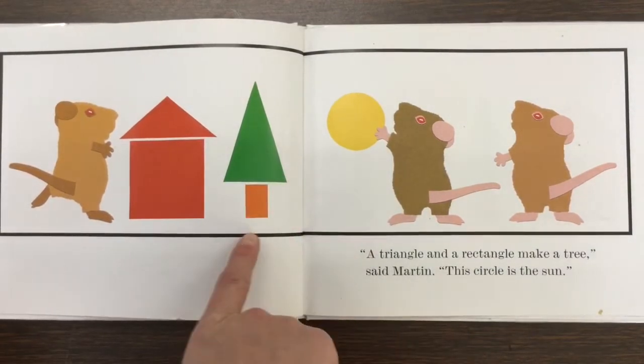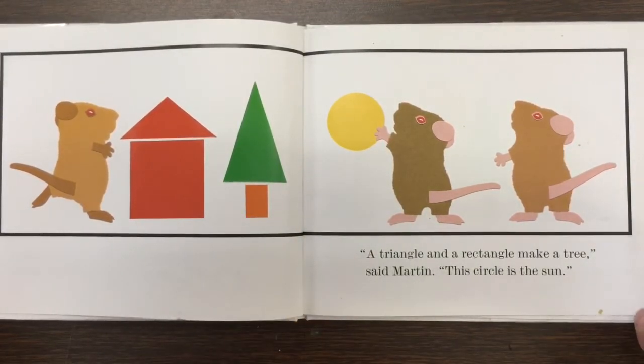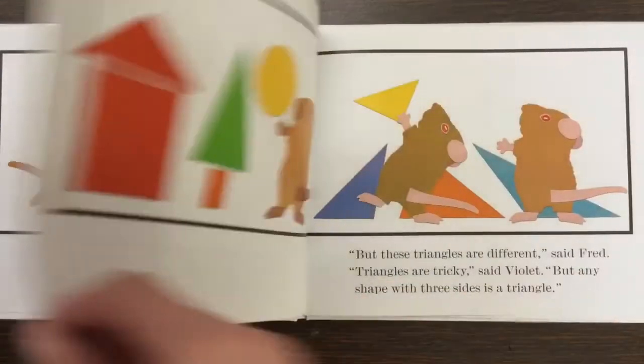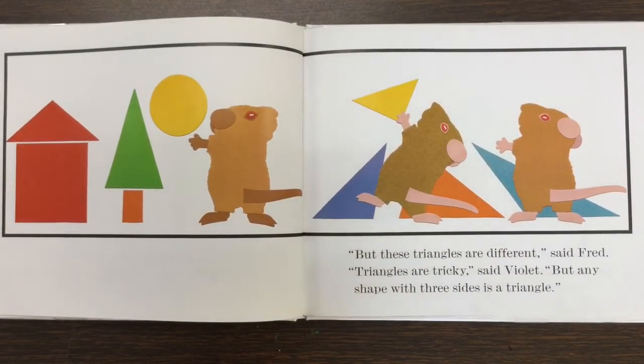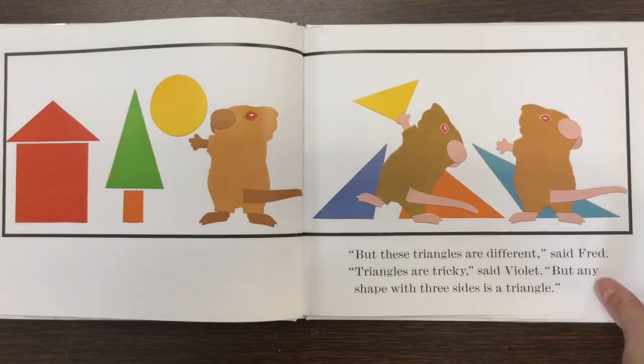A triangle and a rectangle make a tree, said Martin. This circle is the sun. But these triangles are different, said Fred. Triangles are tricky, said Violet. But any shape with three sides is a triangle.